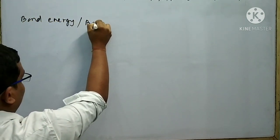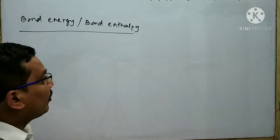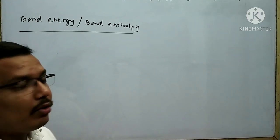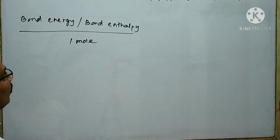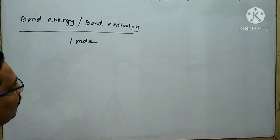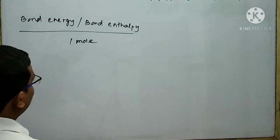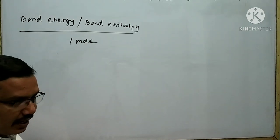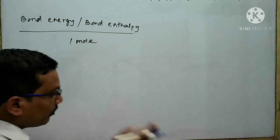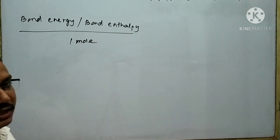Bond energy is also considered as bond enthalpy. The amount of energy required to break one mole of a bond is called bond energy. Remember an important point: when we want to break a bond, we generally need some energy. On the other hand, when we want to form a bond, there is a release of some energy.